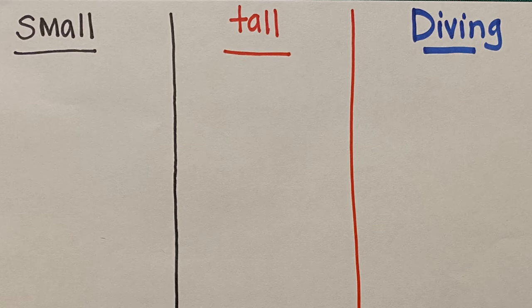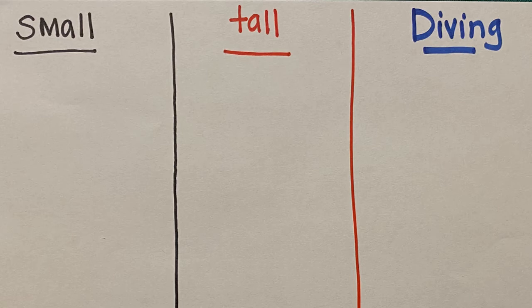Now starting at the beginning of the alphabet with lowercase A, think about what type of letter it is. Is it small, tall, or diving? Then put it under the heading where it belongs. Go through the alphabet and do that for all 26 letters. Pause the video now because the answers will be showing soon.